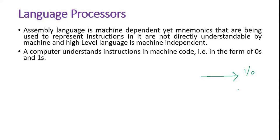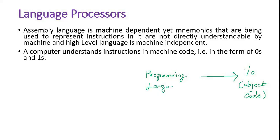There is a technical name for this — it is called object code, or machine code. So people started thinking about programming languages. It can be a high level language or low level language. These are called source code, whereas machine code is called object code.